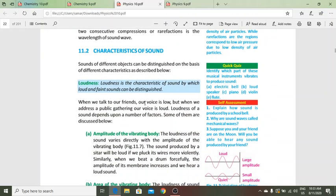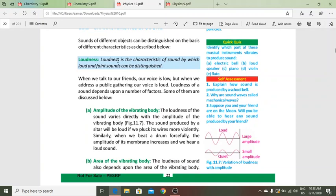What are characteristics of sound? Sounds of different objects can be distinguished on the basis of different characteristics. Loudness is the characteristic of sound by which loud and faint sounds can be distinguished. Jab hum friend se baat karte hain to hamari awaaz dheemi hoti hai, lekin kisi public gathering mein hamari awaaz unchi hoti hai. Loudness depends on number of factors.